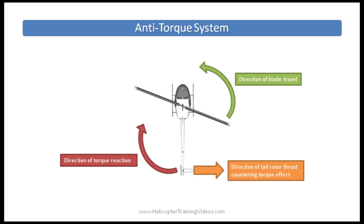The actual amount of torque is directly related to the amount of engine power being used to turn the main rotors. So as the engine supplies more power, the tail rotor must produce more thrust to counter that increased torque effect. Remember, as you increase or decrease power, torque changes and therefore you must make changes with the anti-torque pedals to adjust the amount of tail rotor thrust required.